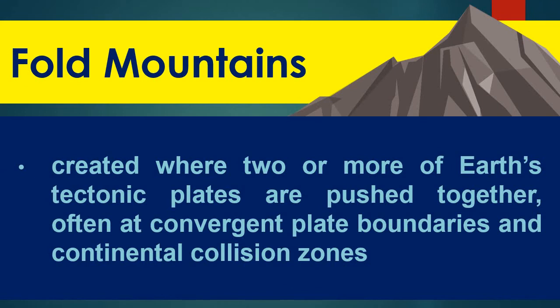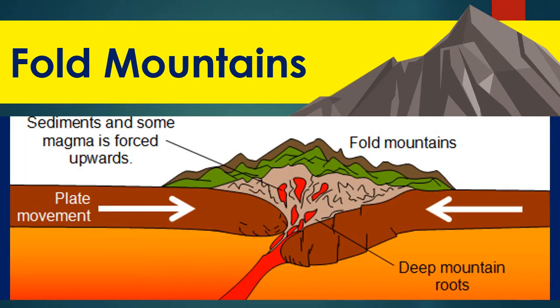Fold mountains are created where two or more of Earth's tectonic plates are pushed together, often at convergent plate boundaries and continental collision zones. Most mountains all over the world are actually categorized under fold mountains — for example, the Himalayas mountain range. What happens is that two plates collide with each other, resulting in the crumpling or deformation on top of the plate boundary. The land masses there get folded, sediments and some magma are forced upwards, and we also have deep mountain roots.